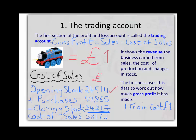In this example we would have purchased during the year forty-seven thousand eight hundred and sixty-five toy trains at a pound each. And at the end of the year, when the accountants counted up how many toy trains we have left, it came to thirty-four thousand two hundred and seventeen. That simply means we must have used thirty-eight thousand one hundred and sixty-two toy trains at a pound each during the year.